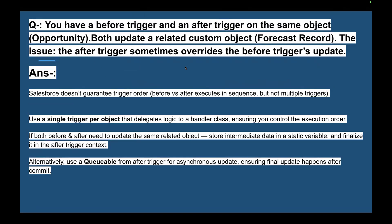You have a before trigger and after trigger on the same object — say an Opportunity — and both update a related custom Forecast record, but the after trigger sometimes overrides the before trigger's update. The answer: Salesforce never guarantees execution order across multiple triggers. Use a single trigger per object that delegates logic to a handler class. If both before and after need to update the same related object, store intermediate data in a static variable and finalize in the after trigger context, or use a Queueable for asynchronous updates.